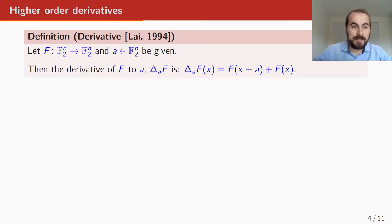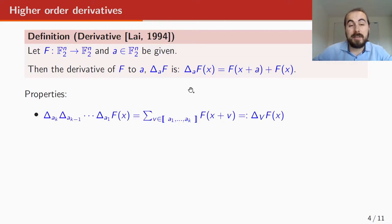Our attack is based on higher order derivatives. I will repeat the definition and most important properties. So we have a function, an element in the domain, and then we say the derivative of f to a, which we call delta_a of f. It's a function that's defined by f(x + a) + f(x). The interesting properties that it has is that you can repeat it as often as you'd like.